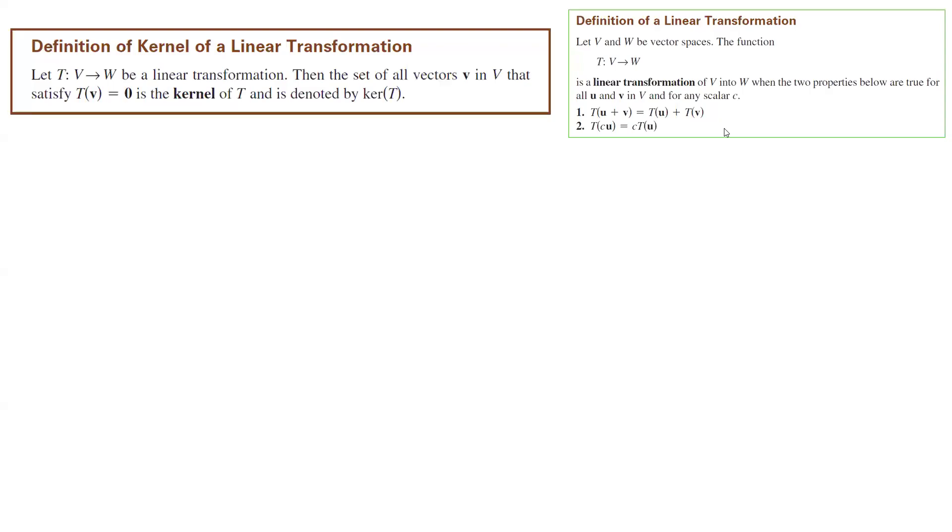If you have a linear transformation, it means that if you have a function that maps the first vector space to the second vector space, remember that it satisfies these two conditions: it preserves addition and it preserves scalar multiplication.